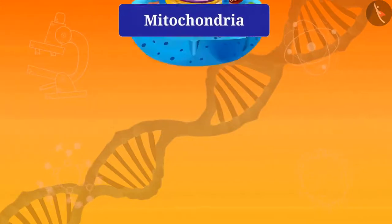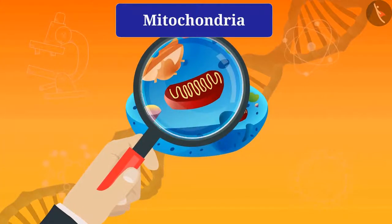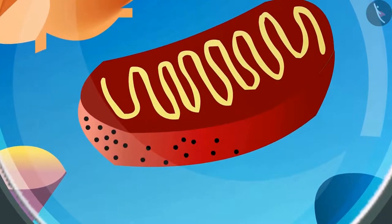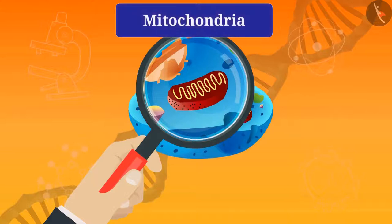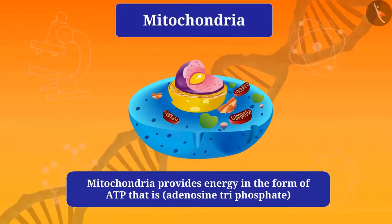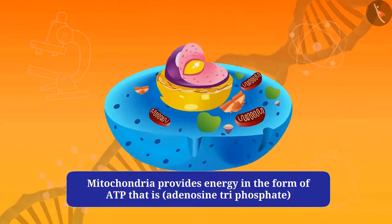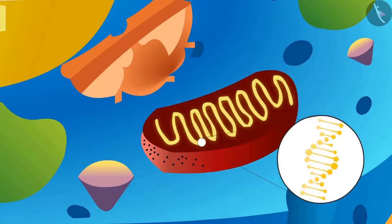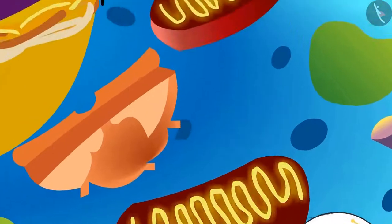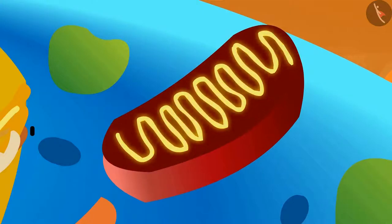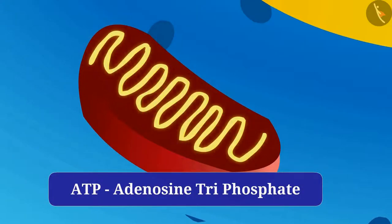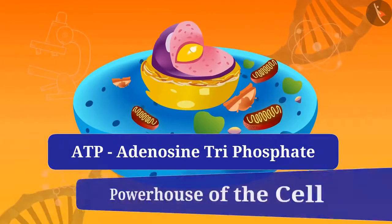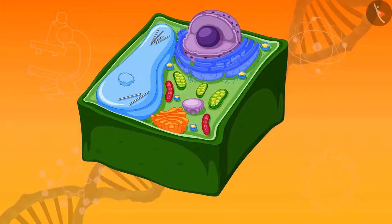Mitochondria is a double-layered membrane organelle — one outer membrane and one inner membrane. The outer membrane is porous and the inner membrane is deeply folded. The cell gets energy from mitochondria. Mitochondria have their own DNA and ribosomes that can make proteins. They provide energy in the form of ATP, that is adenosine triphosphate, to perform the necessary chemical reactions. For this reason it is also called the powerhouse of the cell.